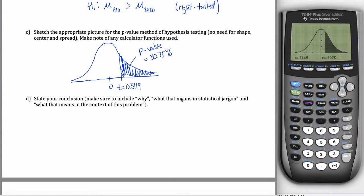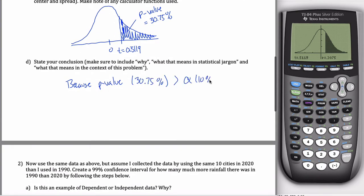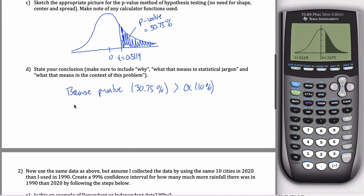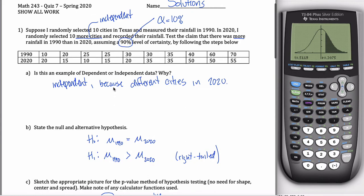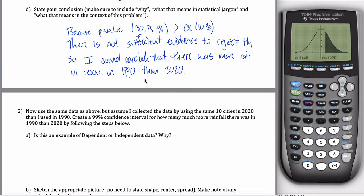Include all the stuff that we always include. I'm going to rewrite that a little bit. So because my p-value is greater than alpha, because the p-value was 30-ish percent, and alpha is only 10%, there's not sufficient evidence that my p-value is greater than alpha. There's not enough evidence to reject the null hypothesis. And so what that means is I cannot conclude that there was more rainfall in 1990 than 2020. And I think that is everything for problem one.